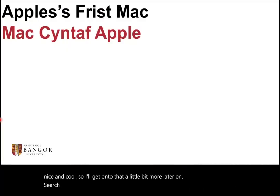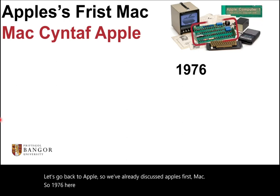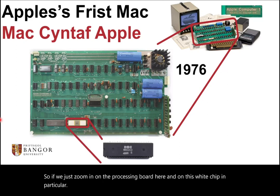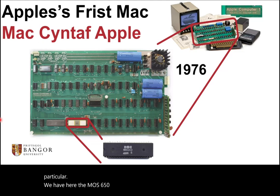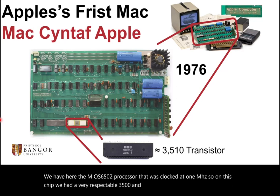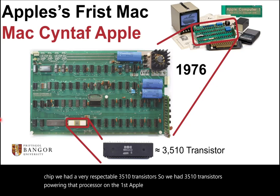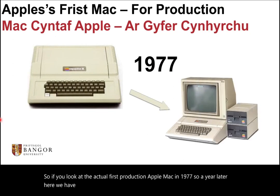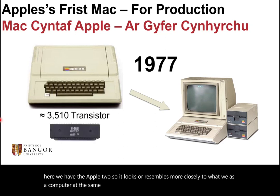Let's go back to Apple. We've already discussed Apple's first Mac — in 1976, here it is. If we zoom in on the processing board and on this white chip in particular, we have the MOS6502 processor clocked at one megahertz, with a very respectable 3,510 transistors powering that processor. Looking at the first production Apple Mac in 1977 — the Apple II — it resembles more closely what we now know as a computer, and it had the same processor, so still 3,510 transistors on that chip.